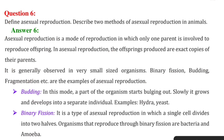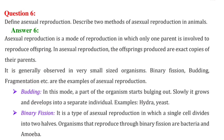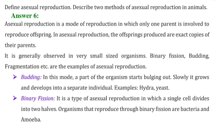Second is binary fission. It is a type of asexual reproduction in which a single cell divides into half. The organisms that reproduce through binary fission are bacteria and amoeba.